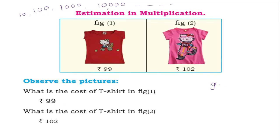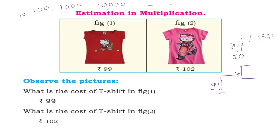For estimation to 10, look at the unit digit. If the unit digit is 1, 2, 3, or 4 — put the tens digit as it is and put 0 in the unit digit. This is estimation to the nearest 10 in the first case.